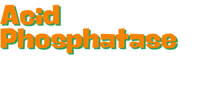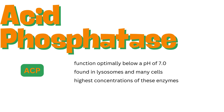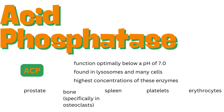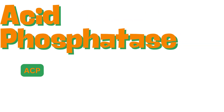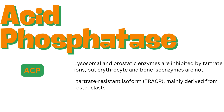Acid phosphatases, or ACP, are enzymes that function optimally below a pH of 7.0. They are found in lysosomes and many cells. The highest concentrations are in the prostate, bone — specifically in osteoclasts — spleen, platelets, and erythrocytes. Lysosomal and prostatic enzymes are inhibited by tartrate ions, but erythrocyte and bone isoenzymes are not. The primary focus here is on the tartrate-resistant isoform, TRACP, mainly derived from osteoclasts.